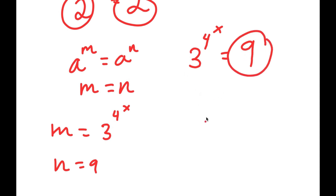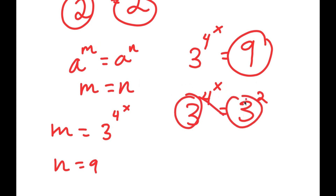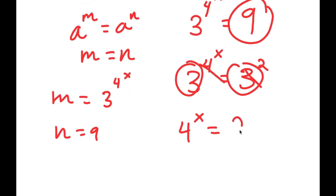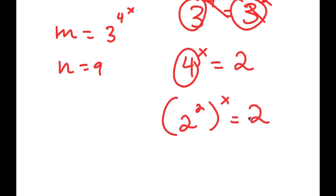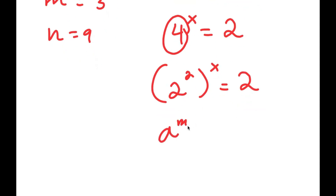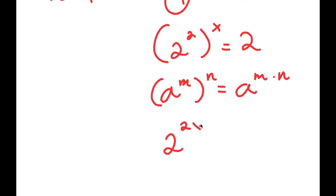Now 9 is the same thing as 3 squared. So now I have 3 to the power of 4 to the power of x is equal to 3 squared. Again, I can use this property because both bases are the same, so 4 to the power of x is equal to 2. Now 4 is the same thing as 2 squared, so I get 2 squared to the power of x is equal to 2. If I have something in the form a to the power of m to the power of n, this equals a to the power of m times n. So 2 to the power of 2x equals 2.